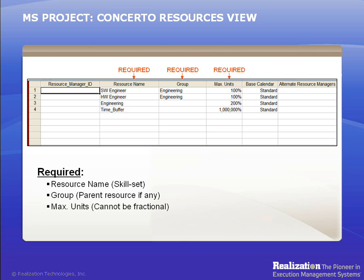As an example, suppose there are two units, or 200% of engineering resources available. Under this, we have Software Engineer with one unit and Hardware Engineer with one unit — three different types of resources. Why do we construct resource sheets with hierarchies like this? Consider a situation where there is an engineering task that can be performed by either a Software or Hardware Engineer. In this case, the task can be assigned to engineering. This increases pooling opportunities for the Software or Hardware Engineer when there are conflicting tasks, and it allows tasks to be performed in parallel.